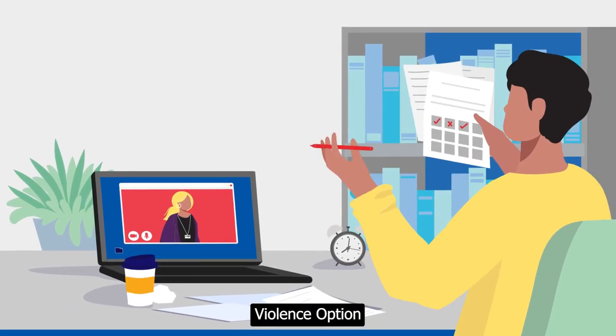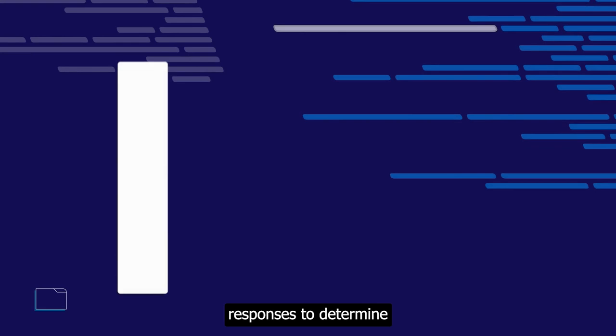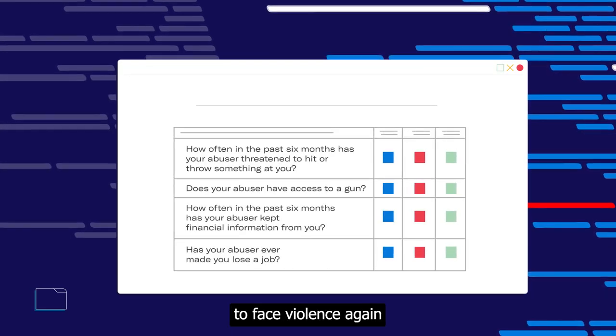New Jersey relies on the Family Violence Option Risk Assessment Tool, an algorithm that uses survivor survey responses to determine how likely they are to face violence again in the future.